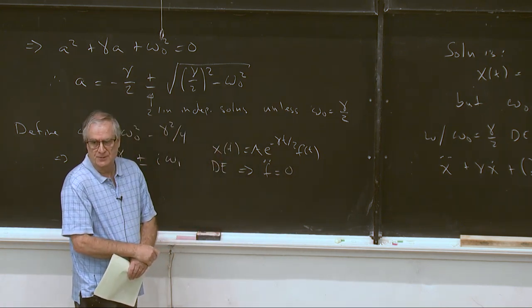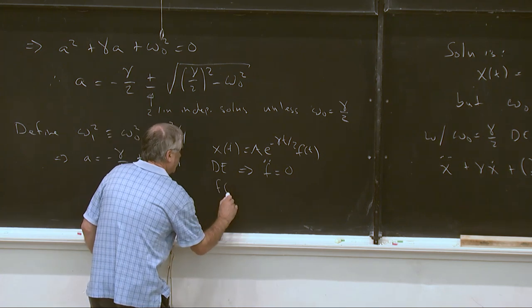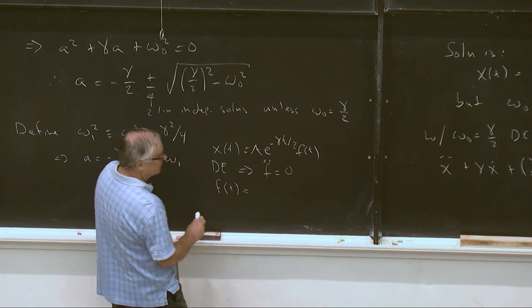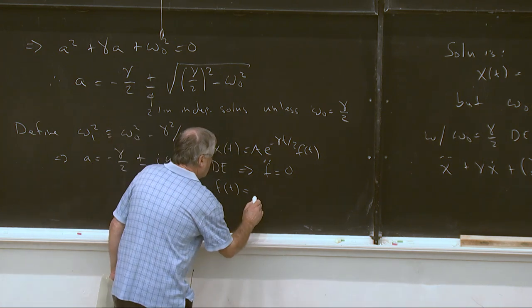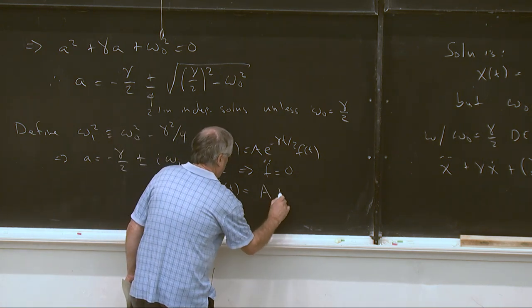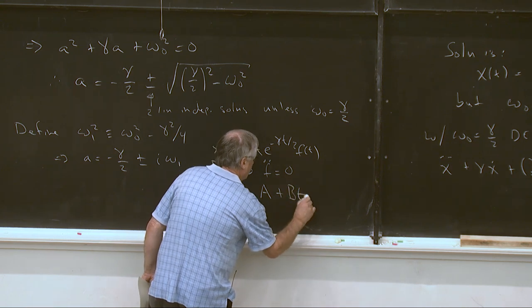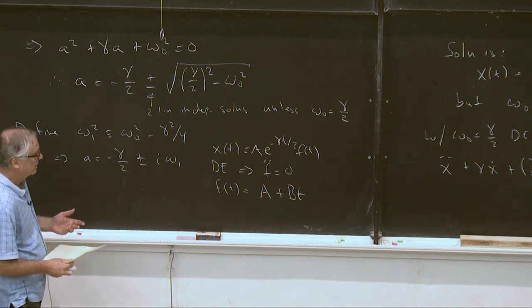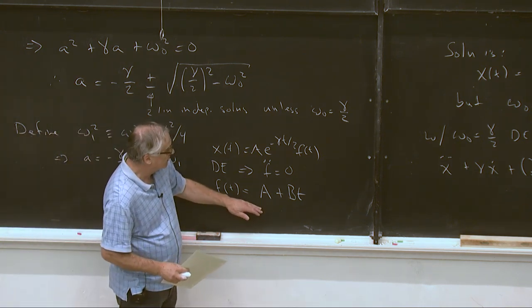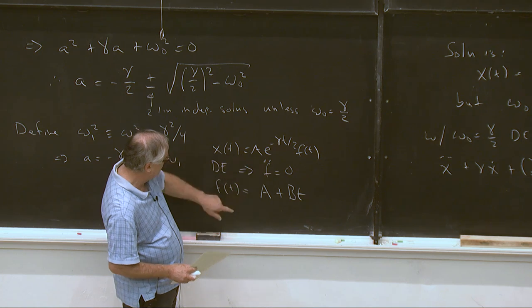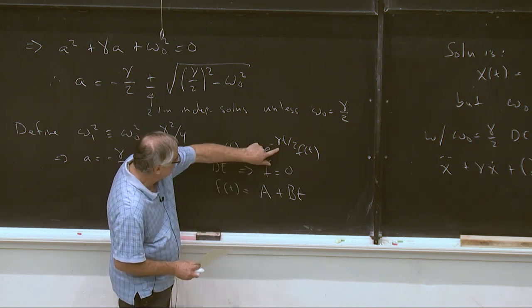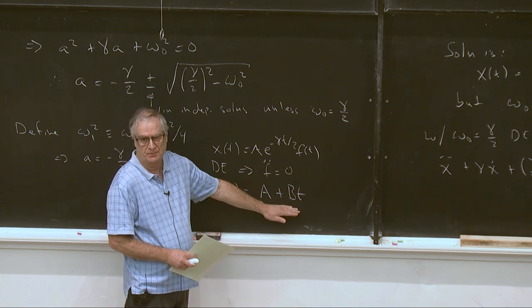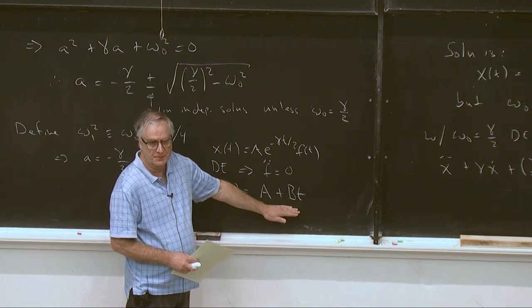Plug into the differential equation x of t equals a e to the minus gamma t over 2 f of t, just plug that in. There's a little bit of algebra but you find that f double dot is equal to 0. The answer comes out nice and simply and so we find that f of t must be equal to a plus bt. So that gives us the solution when omega naught is equal to gamma over 2. We just take e to the minus gamma t over 2 times this linear affine function a plus bt. So that special case we get that.